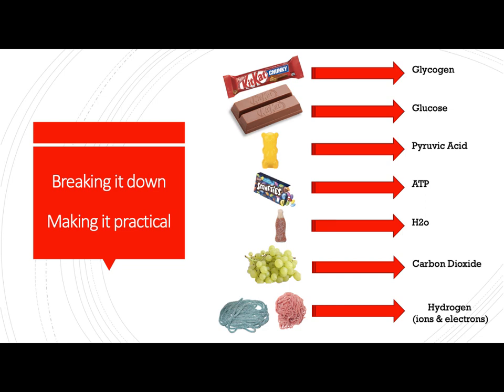We've got our cola bottles for our H2O. We've got grapes for our carbon dioxide. And for our hydrogen, again, I'm going to use three different things - sort of a purple lace for our hydrogen, our red laces for our hydrogen ions, and our green laces for our hydrogen electrons.